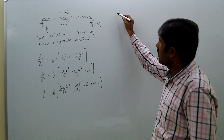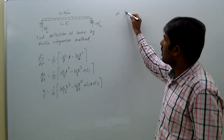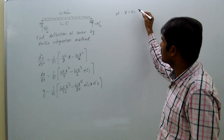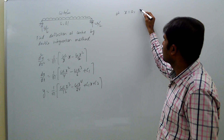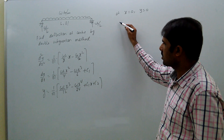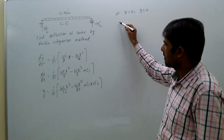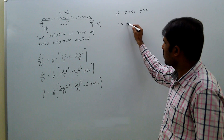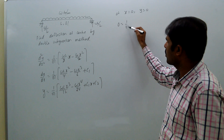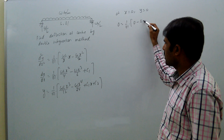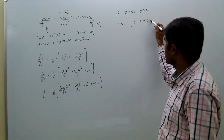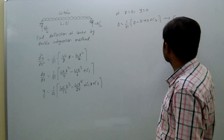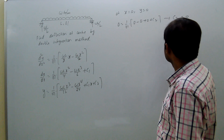Now, applying the first boundary condition: at x equal to 0, y is 0. That means 0 equal to 1 by EI into 0 minus 0 plus 0 plus C2. From this, C2 equal to 0.